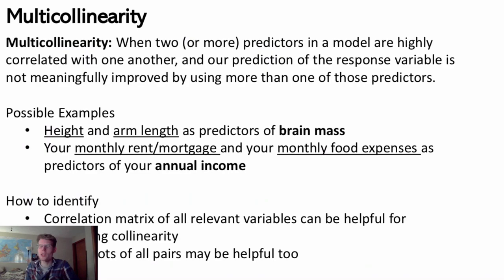What you will encounter is general collinearity — close or high collinearity. We usually call it multicollinearity, where the 'multi' comes from multiple regression with multiple predictors. We have collinearity between predictors, but not necessarily exact or perfect collinearity. Whenever two or more predictors are highly correlated and our prediction of the response is not meaningfully improved by using more than one, then we have multicollinearity.